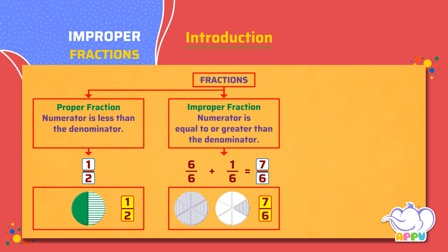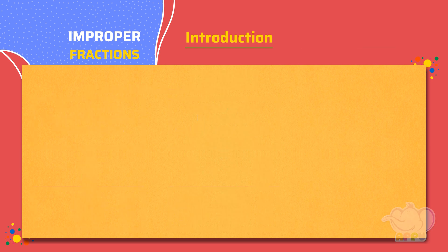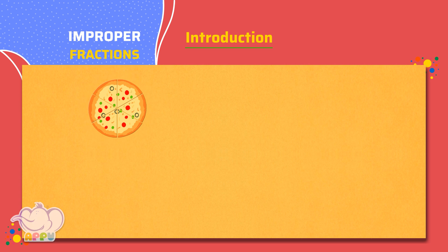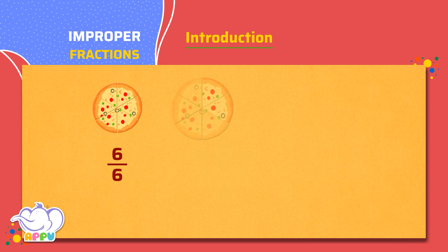Let's see an example on how we get an improper fraction. Two friends order a pizza and finish all 6 slices. Then they order one more pizza and finish 2 more slices. So, they finish 6 by 6 plus 2 by 6 slices.